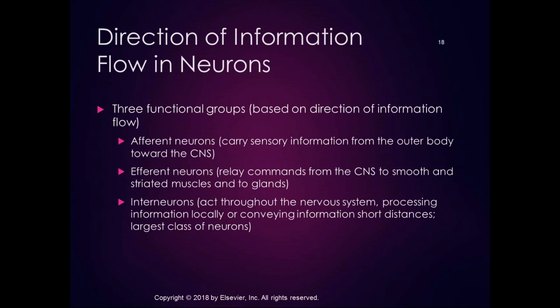There are three functional groups of neurons based on the direction of information flow. Afferent neurons carry sensory information from the periphery towards the central nervous system. Efferent neurons relay commands from the central nervous system to smooth and striated muscles and to glands. Interneurons act throughout the nervous system processing information locally or conveying information short distances — they are the largest class of neurons. We have a fair number of afferents and efferents, but interneurons are carrying all that information.